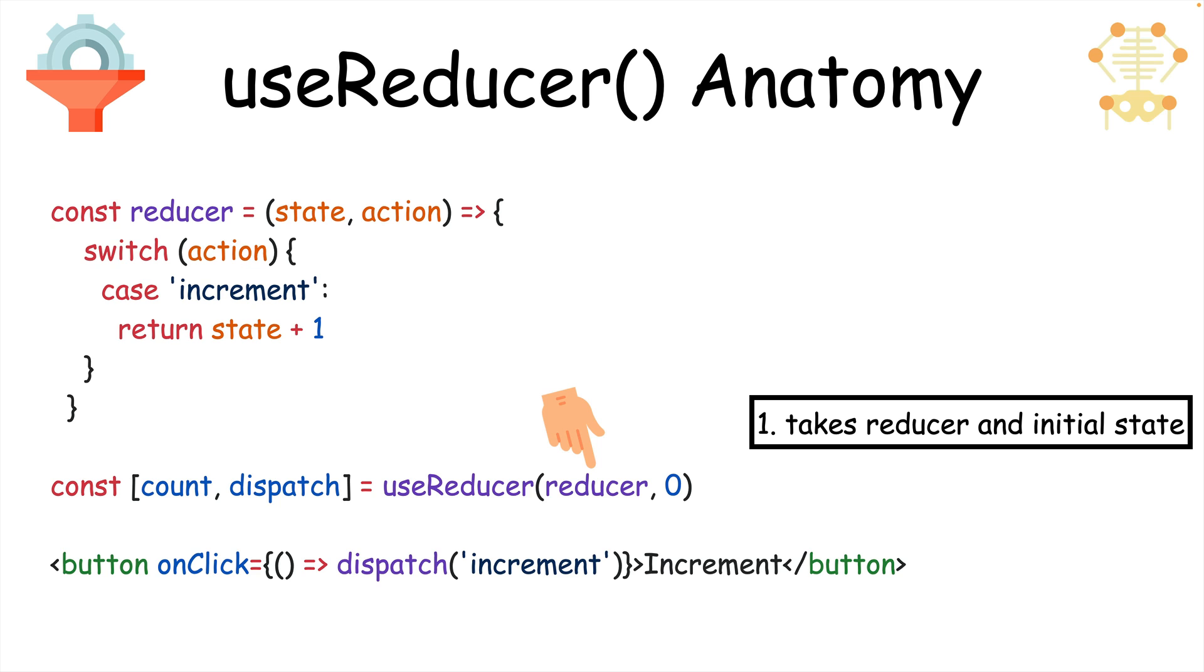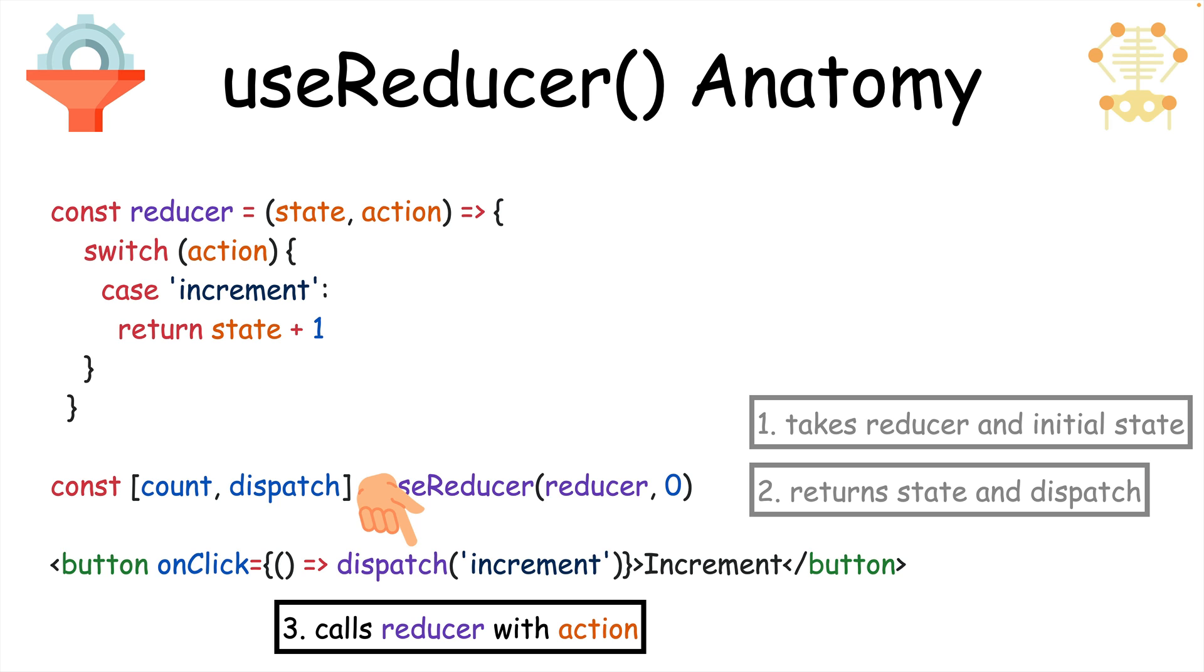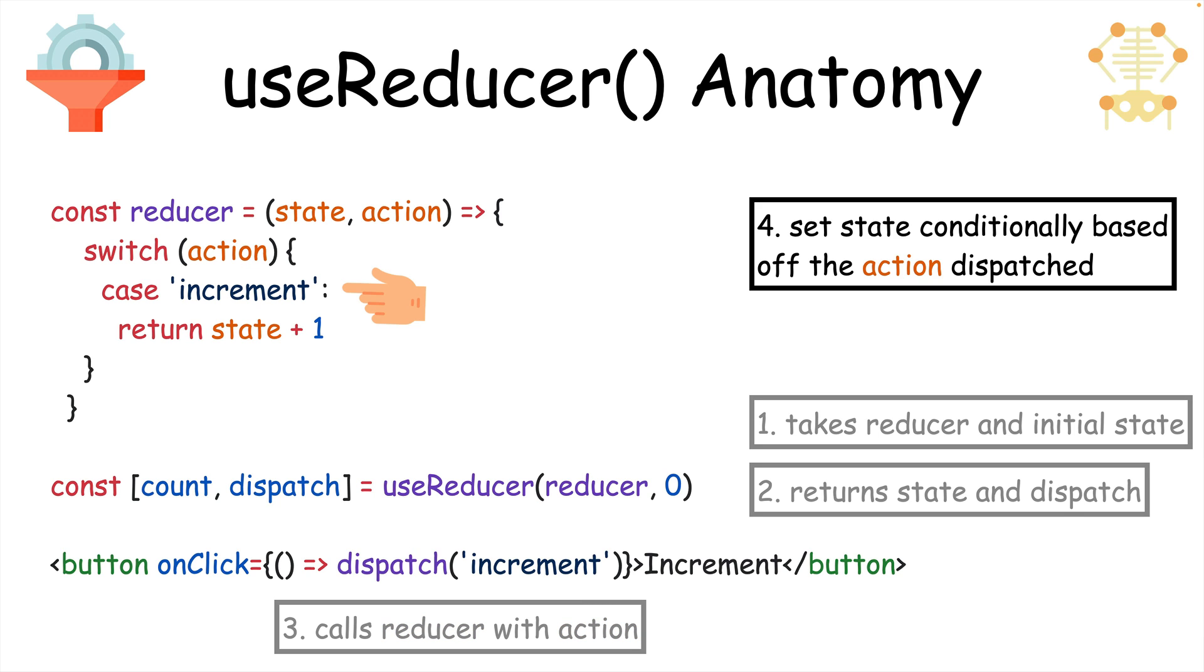useReducer accepts both a reducer function and a starting state value. And like useState, it returns an array which includes the state variable and a new function called dispatch. When dispatch is called, it runs the reducer function and sends data to it called an action. The benefit of the action data is to conditionally set state based off of what action came in.